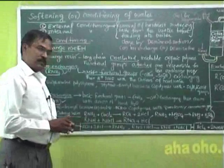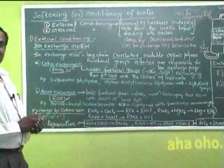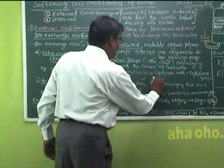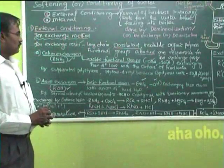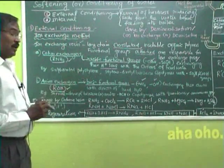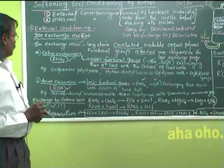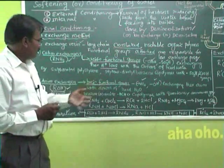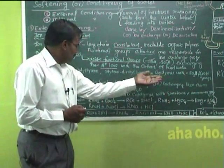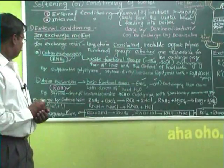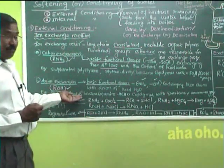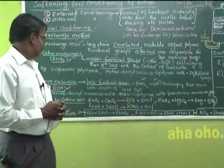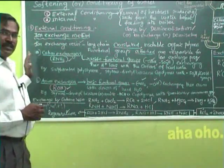The anionic exchanger has basic functional groups like NH2 or OH, which exchange the anions of hard water. Examples include styrene-divinylbenzene-amine-formaldehyde copolymer with quaternary ammonium groups. So these are the two types of resins used.